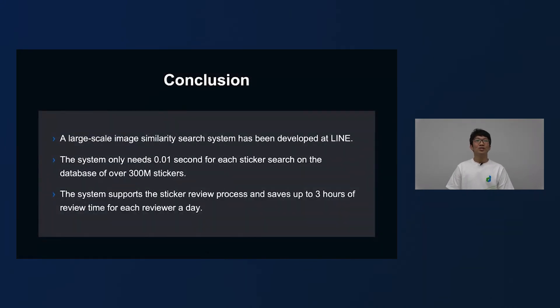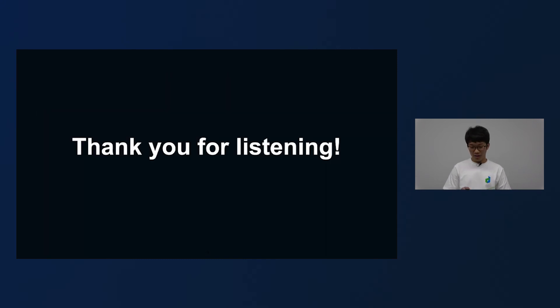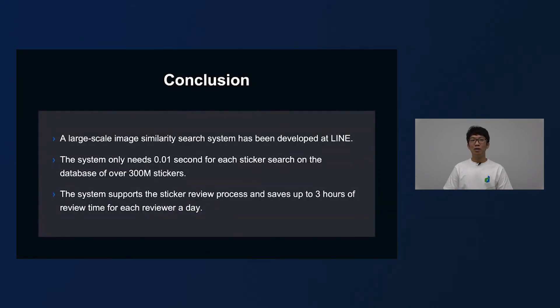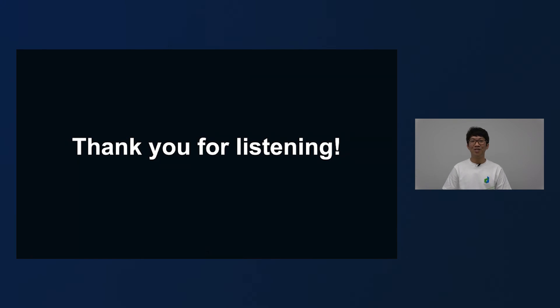Conclusions. In this work, a large scale image similarity search system has been developed and implemented at LINE. The system only needs 0.01 second for each sticker search on the database of over 300 million stickers. And the system supports the sticker review process, and saves up to 3 hours of review time for each reviewer a day. That's the end of my talk. Thank you for listening.